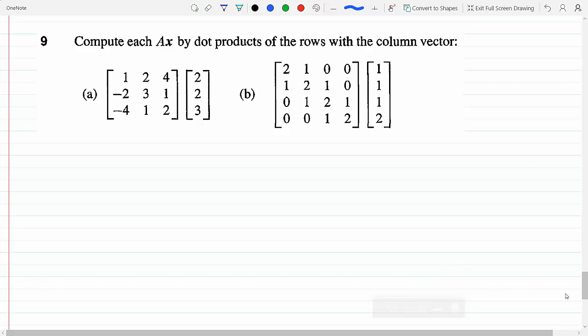Here we have to compute AX. A is the matrix 3 by 3 and X is the column vector 3 by 1 by dot product of the row with the column vector. That's how we actually multiply matrices. We take the dot product between the rows and the vector, the column vectors.